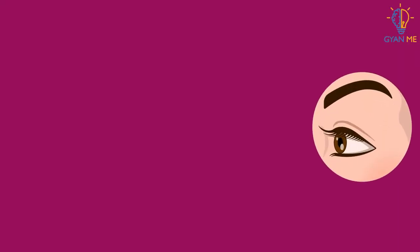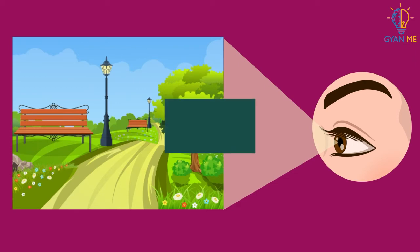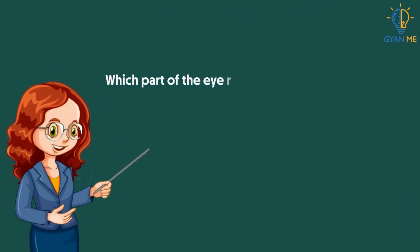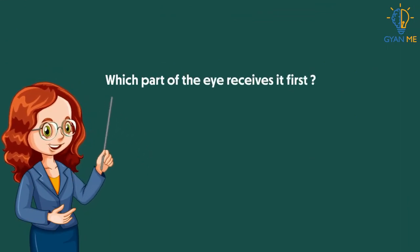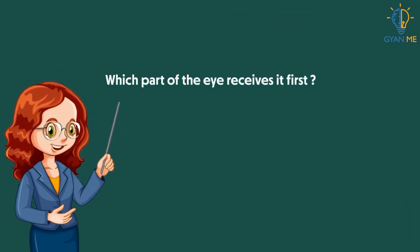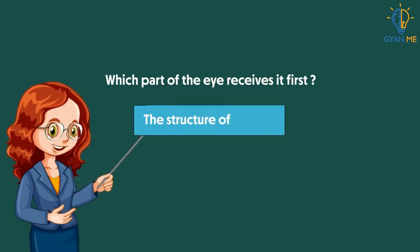The same thing happens when we see any object — the reflected light from the object reaches our eye. Now, the question is which part of the eye receives it first? To answer this, we will have to understand the structure of the eye.